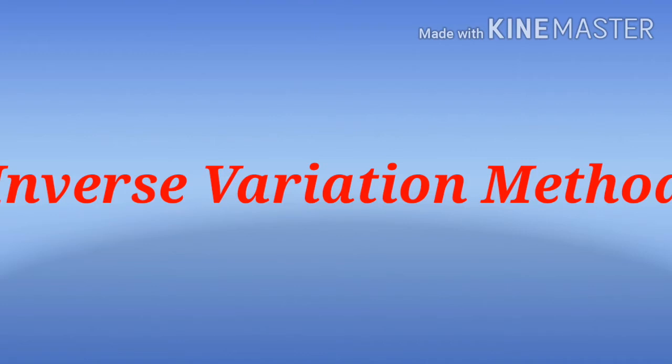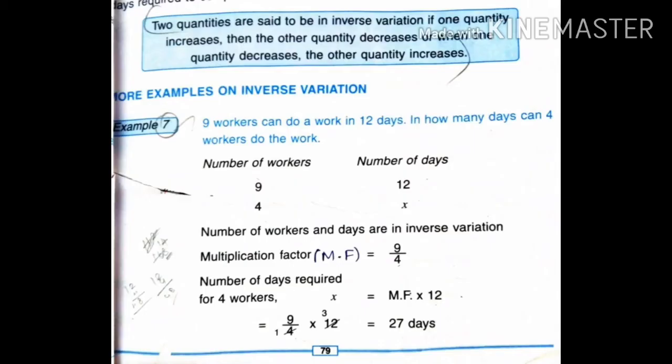...one quantity increases, then the other quantity decreases, or when one quantity decreases the other quantity also decreases. In direct variation, if one quantity value increases, then the other quantity value also increases, and if one quantity value decreases, the other quantity value also decreases.